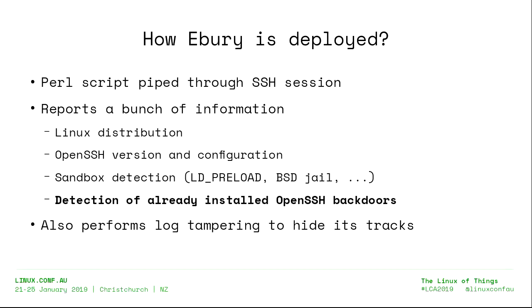Something we didn't write about in our paper but discussed at conferences is the reconnaissance script they used before deploying Ebury. Basically this script is a Perl script piped through the SSH session, so it is not stored on disk. Its main purpose is to gather information such as the Linux distribution and OpenSSH version. It's also used for log tampering to hide their tracks. Most importantly, it detects already installed OpenSSH backdoors — and this script contains more than 47 different detections of other backdoors.